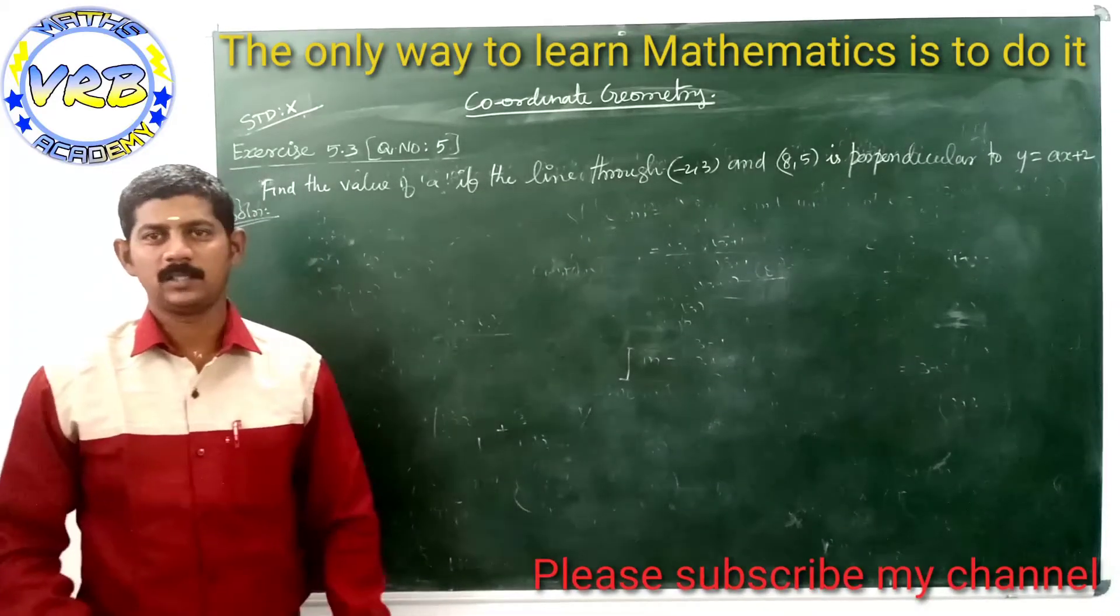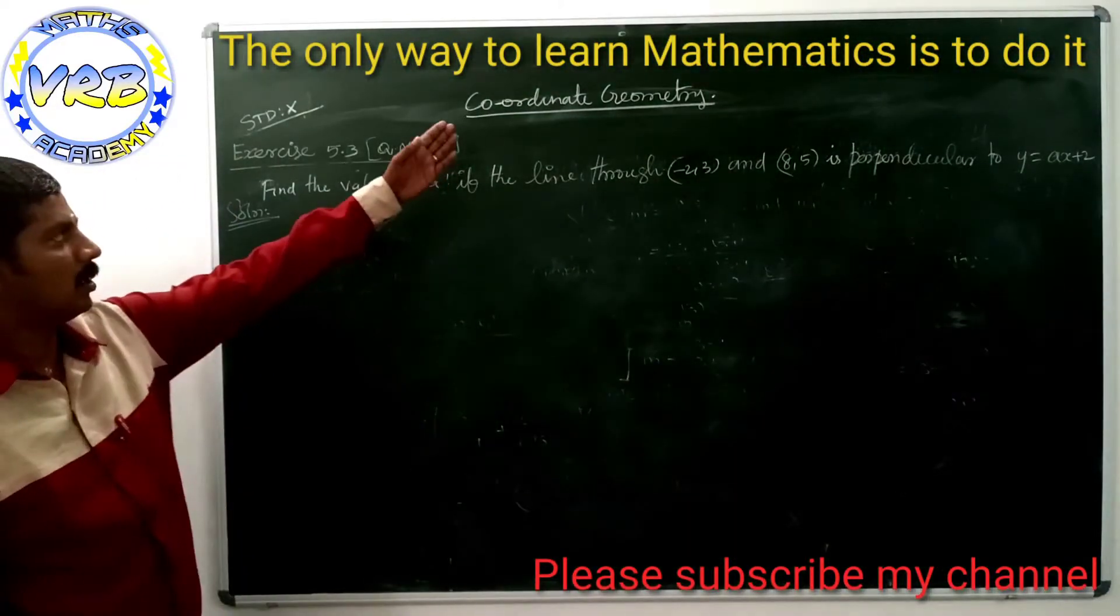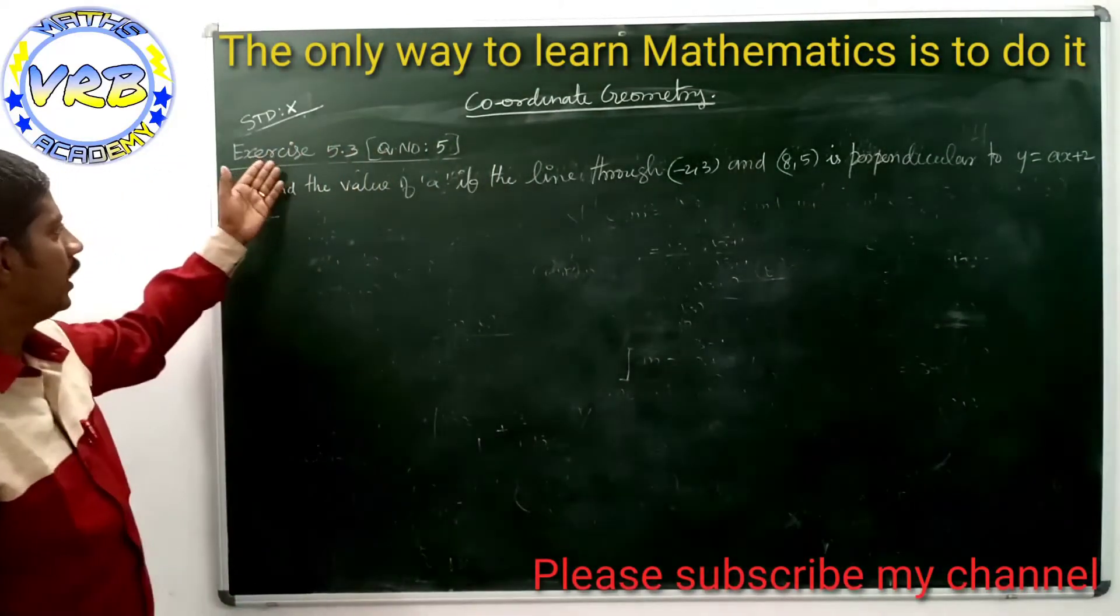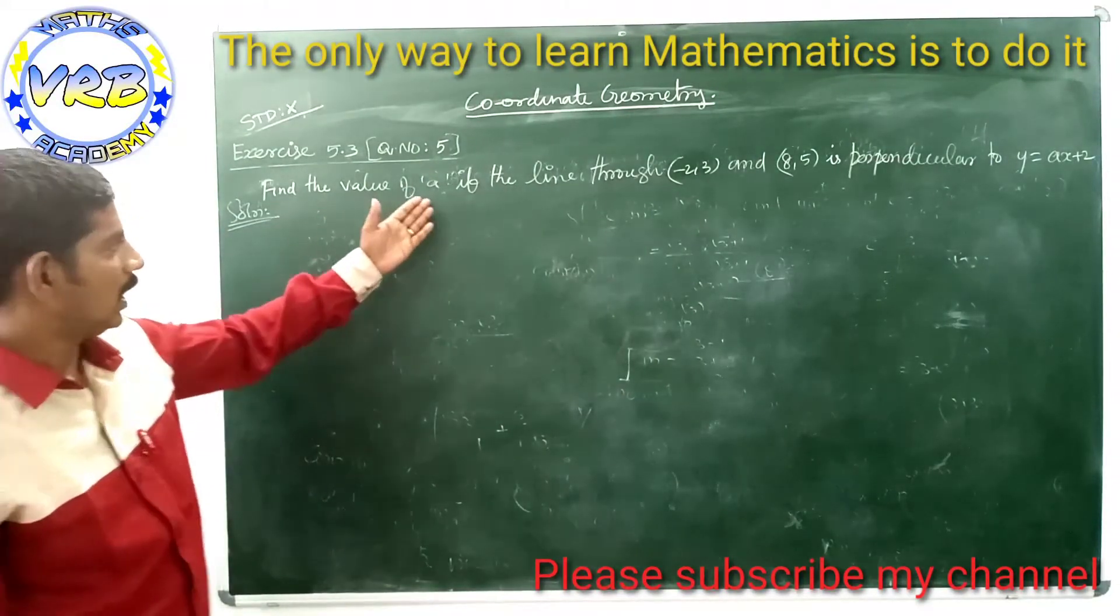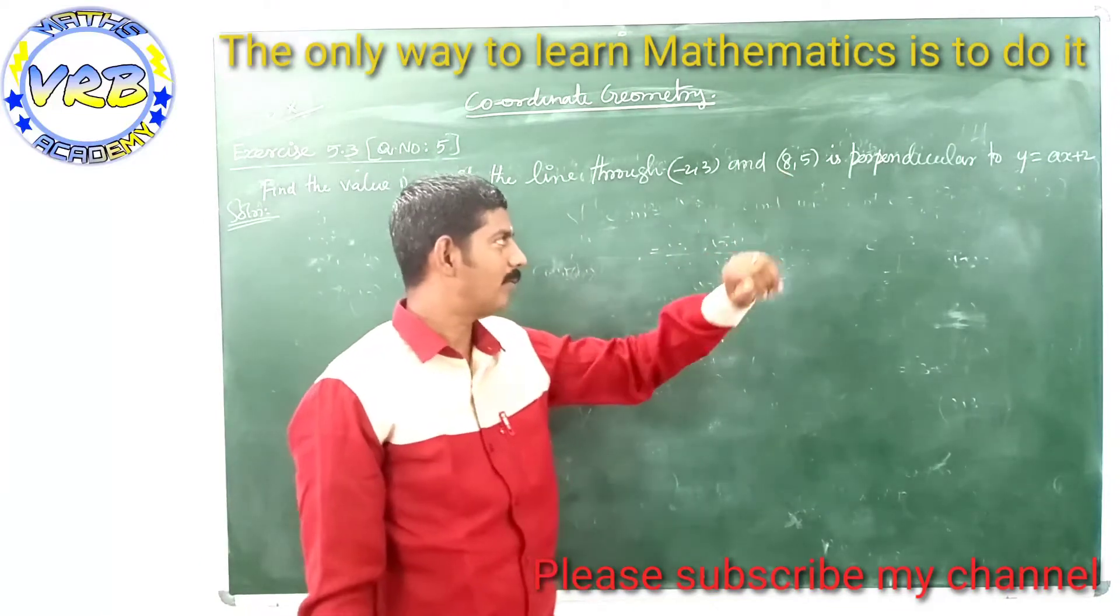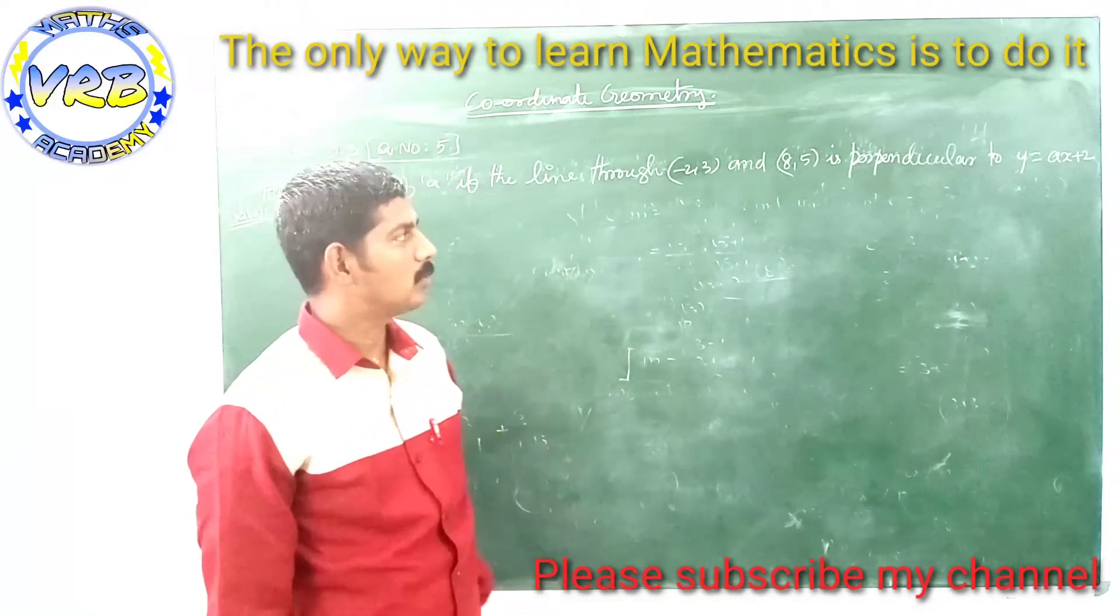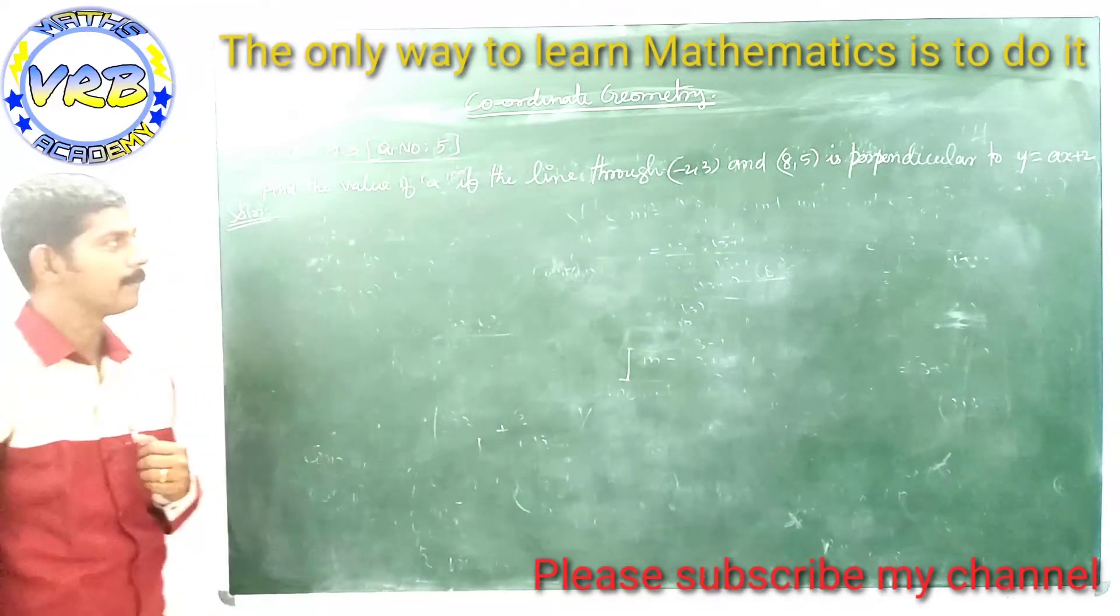Good morning students, I'm Rajabalan from VRB Maths Academy. Today we are going to see about the topic coordinate geometry, exercise 5.3, question number 5. Find the value of a if the line through (-2, 3) and (a, 5) is perpendicular to the line y = ax + 2.